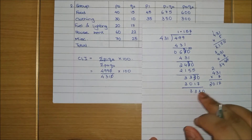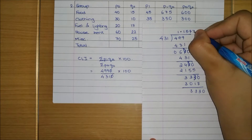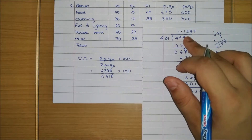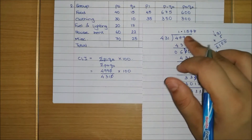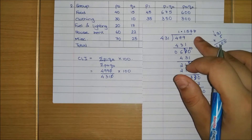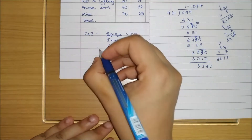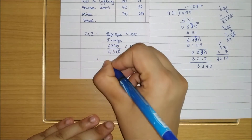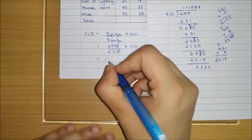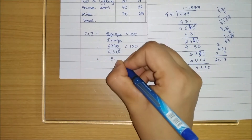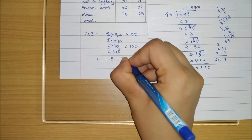We will not solve further; we have already got 4 digits after the decimal. When we multiply by 100 we will get 2 digits after the decimal. So our final answer is 115.77.